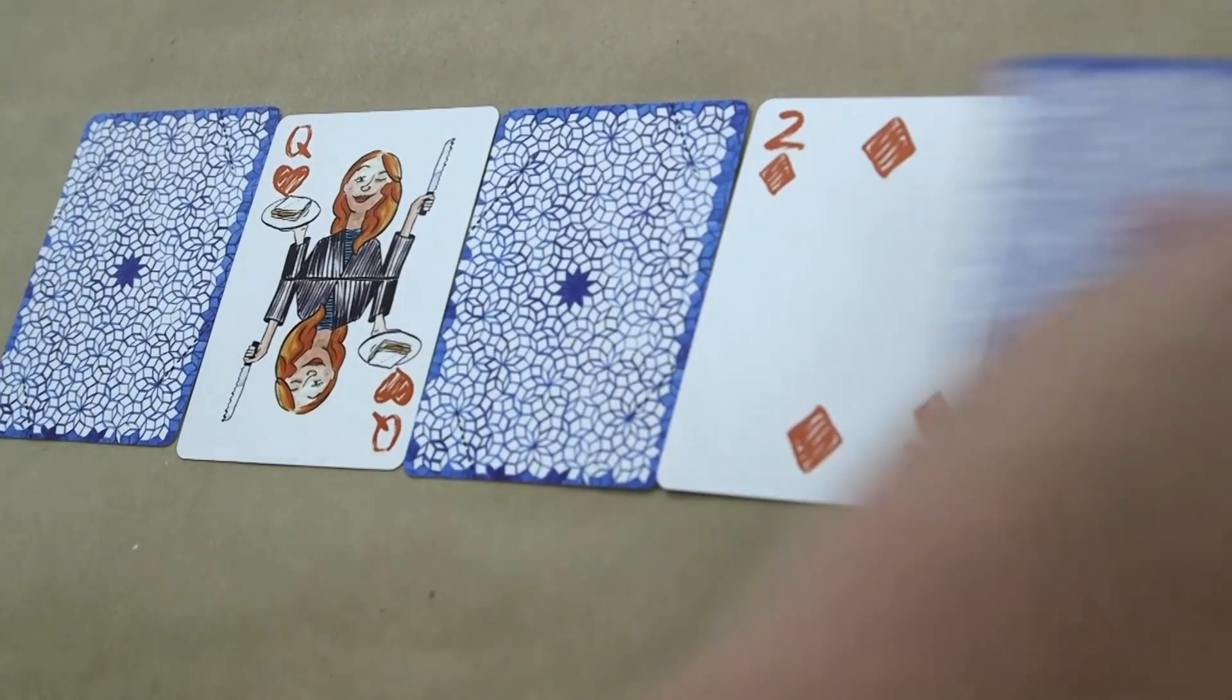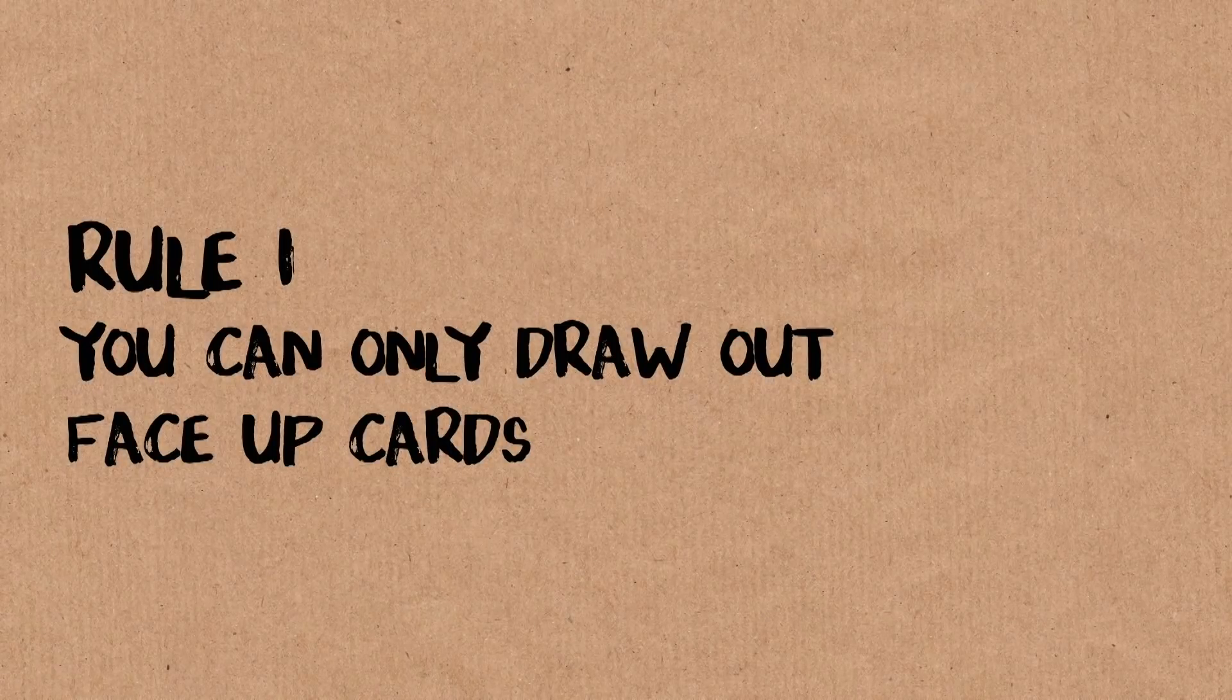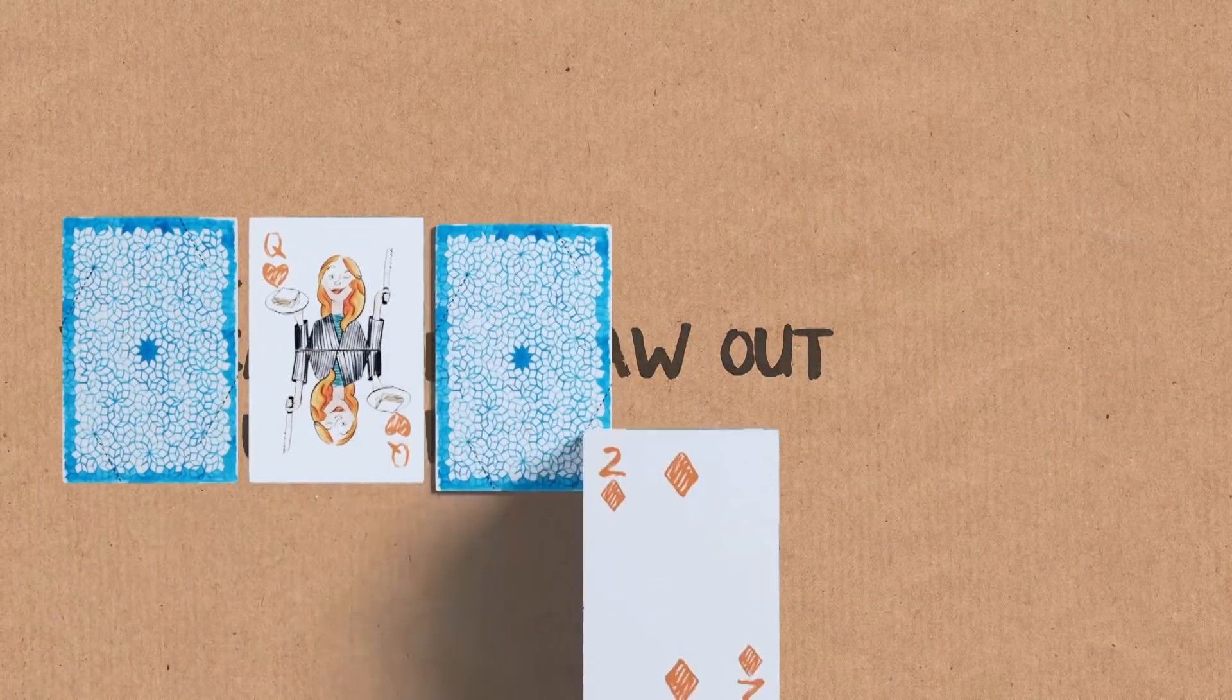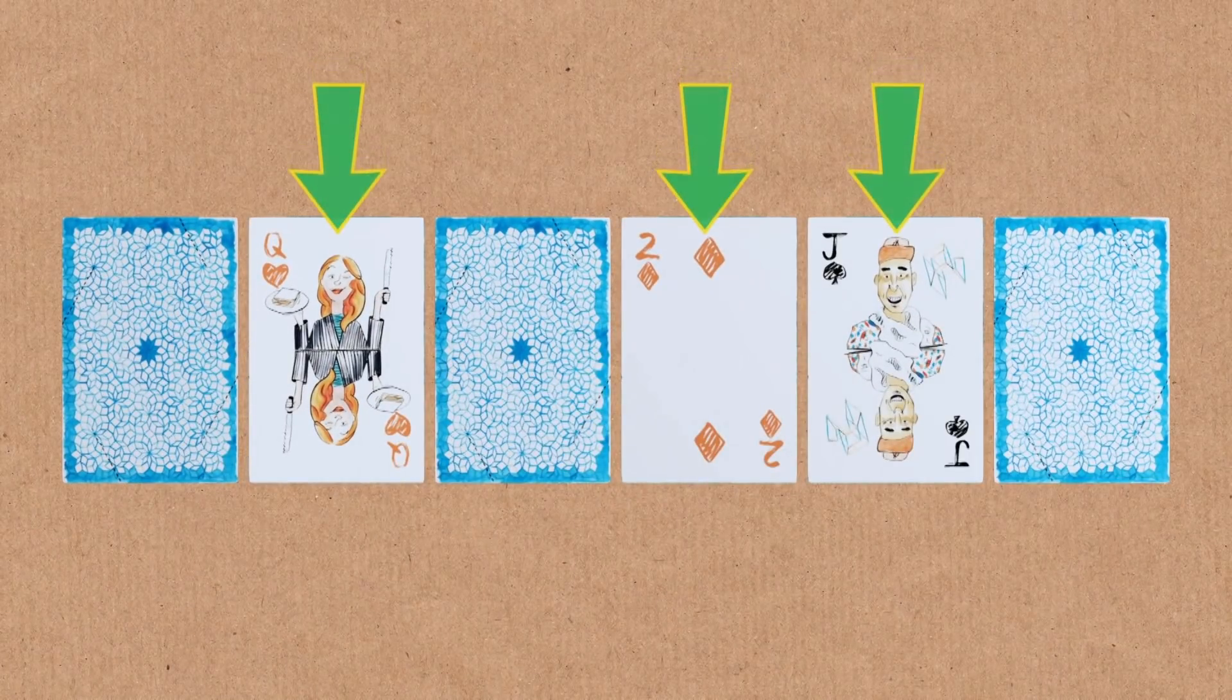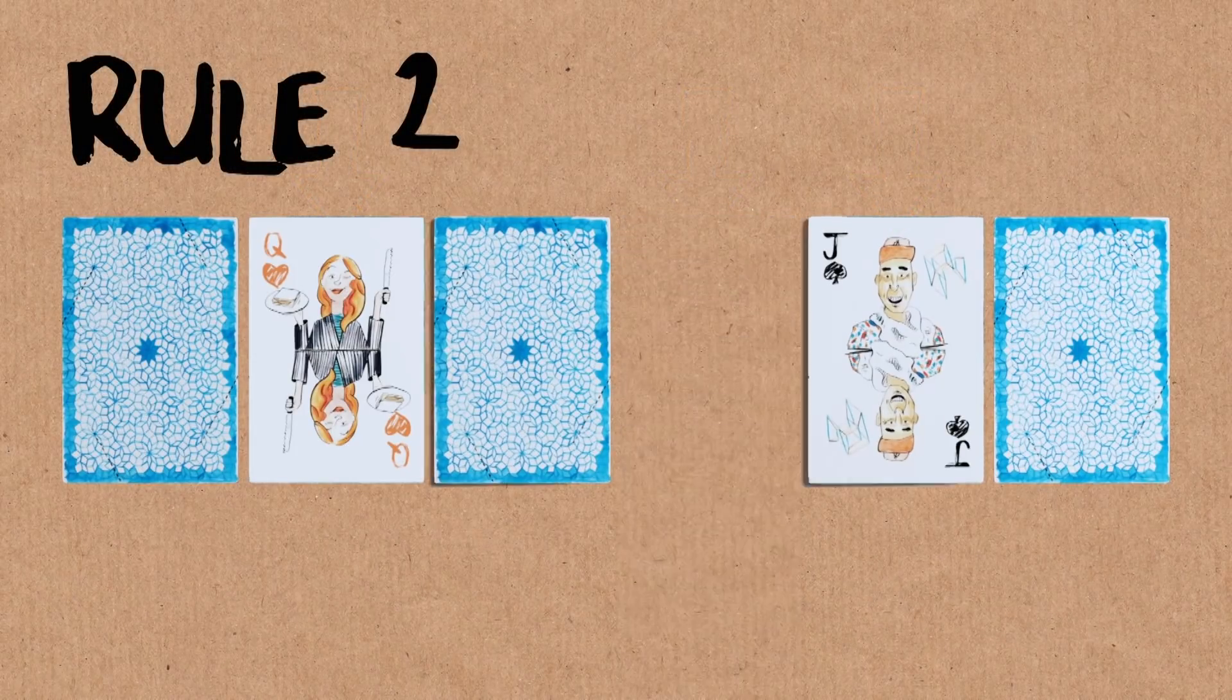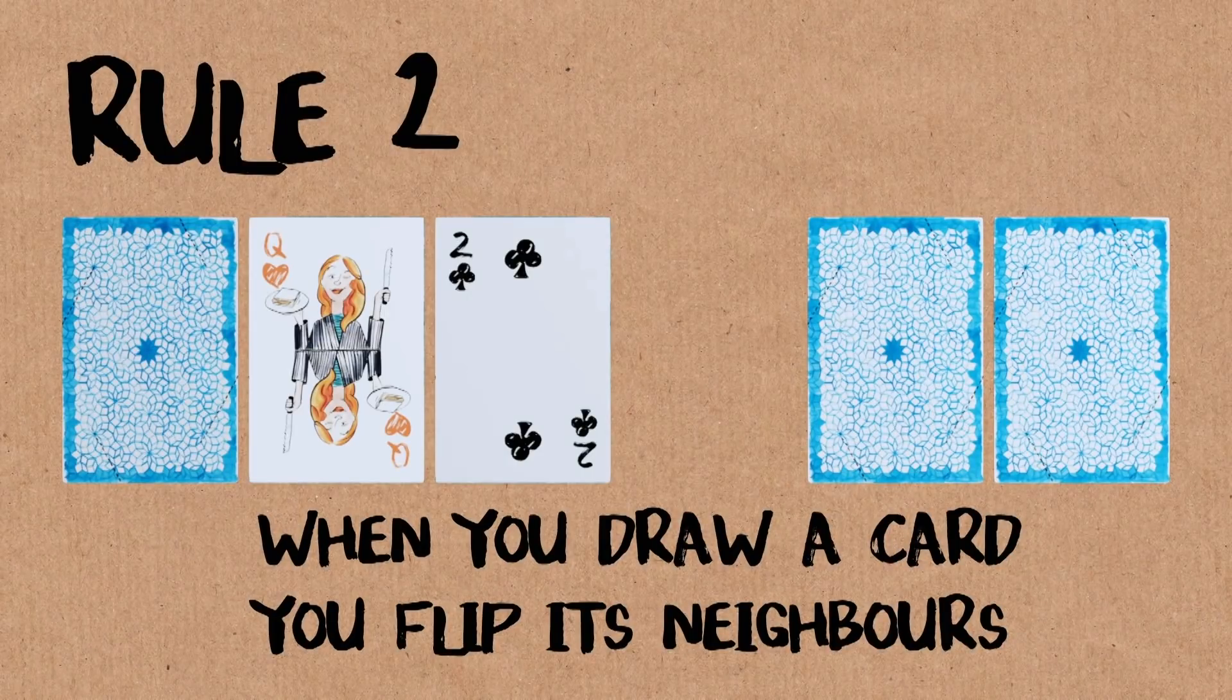The objective of the game is to wipe the table of all the cards. The way the game is played is that you can draw out a card only when it's face up. So right now I've got three choices for which card I could start by drawing out. And the second rule is that when you draw the card, if it's still touching either of its neighbors, you flip over any of its remaining neighbors. So anything that's still touching it gets flipped over.